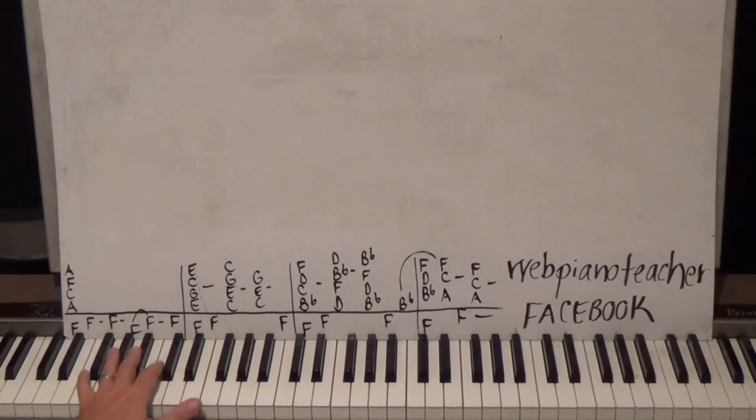So we'll start on an F. We are in the key of F. Low F on the pinky, a higher F on the thumb. So here's the rhythm. Then he goes...